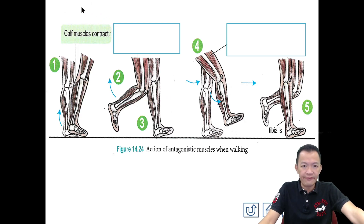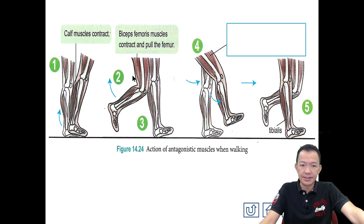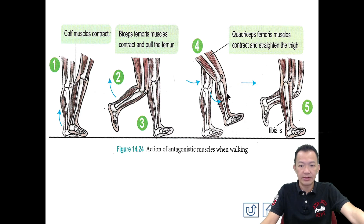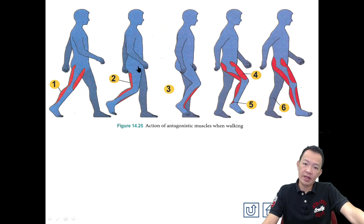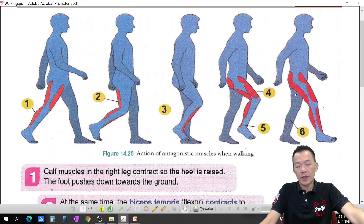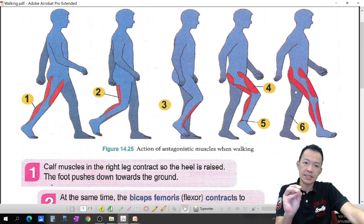So when you want to move, the calf muscle contracts — the lower leg muscle contracts, and your heel is pulled up. Then your toes point forward. Then the biceps femoris muscle contracts and pulls the femur up, bending the leg up. Then the quadriceps femoris muscle contracts to straighten the thigh, stepping forward. There is another detailed diagram in your textbook — read it yourself slowly.